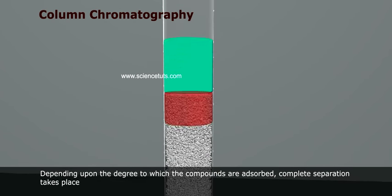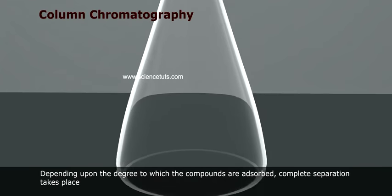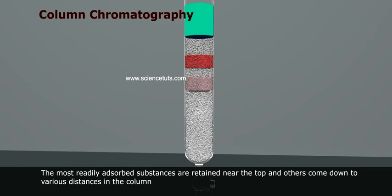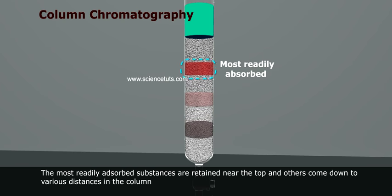Depending upon the degree to which the compounds are adsorbed, complete separation takes place. The most readily adsorbed substances are retained near the top and others come down to various distances in the column.